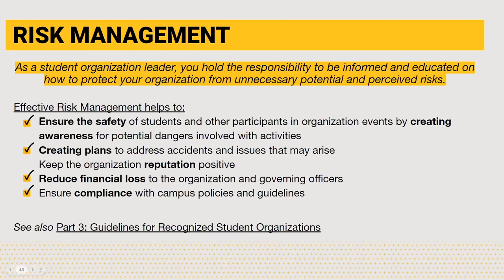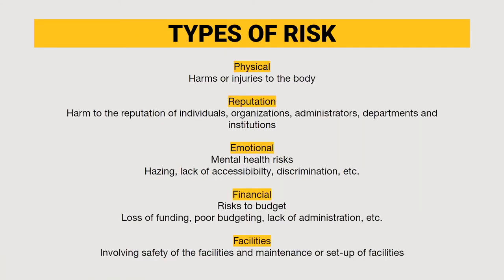As a student organization leader, you hold the responsibility to be informed and educated on how to protect your organization from unnecessary potential and perceived risks. Effective risk management can help keep you and your organization members safe when planning events, holding meetings, and existing on campus. The PREF model is one that is easy to remember and helps RSOs cover their bases when thinking through different kinds of risks: physical, reputational, emotional, financial, and facility risks could show up in a variety of ways depending on your organization's goals and objectives.